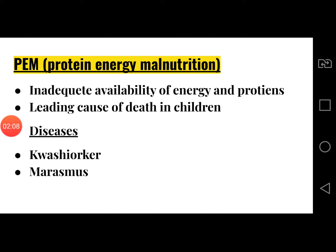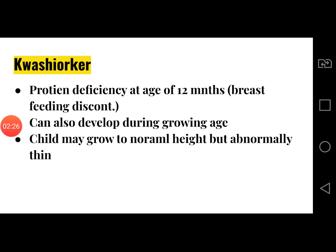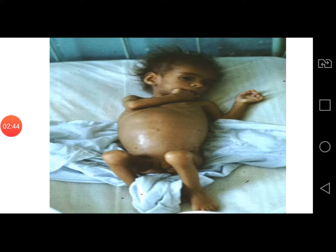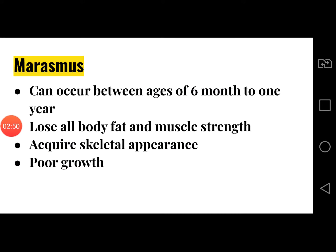Protein energy malnutrition is the main leading cause of death in children. It causes different diseases like Kwashiorkor and Marasmus, both of which occur in children. Kwashiorkor results due to protein deficiency at the age of 12 months when breastfeeding is discontinued. It can also develop during the growing age of children, and the child may grow to normal height but be abnormally thin. This is a picture of a child patient suffering from Kwashiorkor.